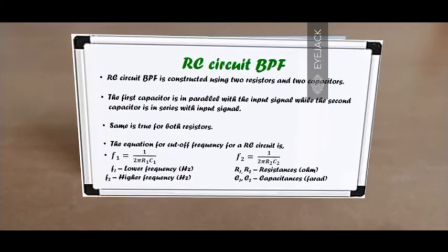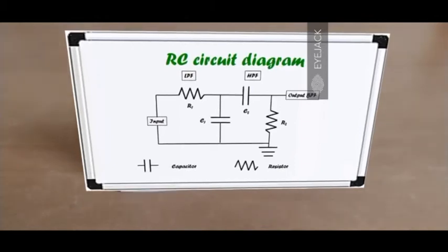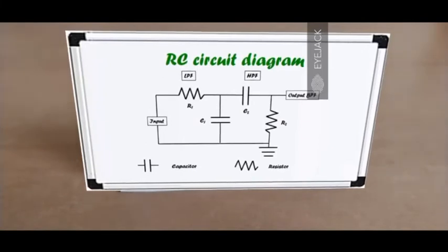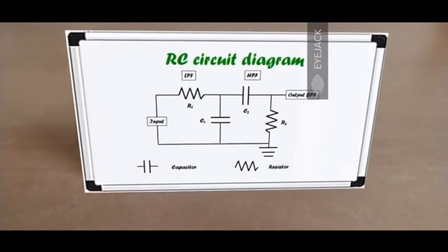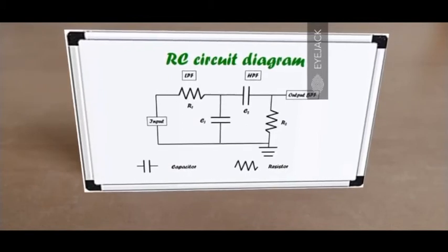Let's look at the circuit diagram. This is the circuit diagram for an RC type bandpass filter. The input is connected in series with resistor R1, in parallel with resistor R2, and the opposite is true for capacitors C1 and C2. It is important to note that resistor R1 and capacitor C1 form a low pass filter, and resistor R2 and capacitor C2 form a high pass filter. The output is a bandpass filter containing only the frequencies in the chosen pass band.